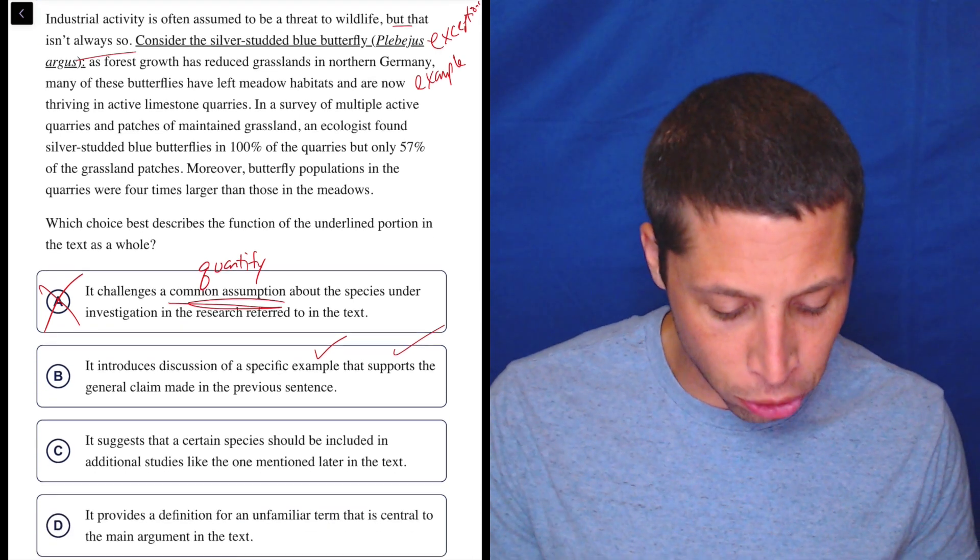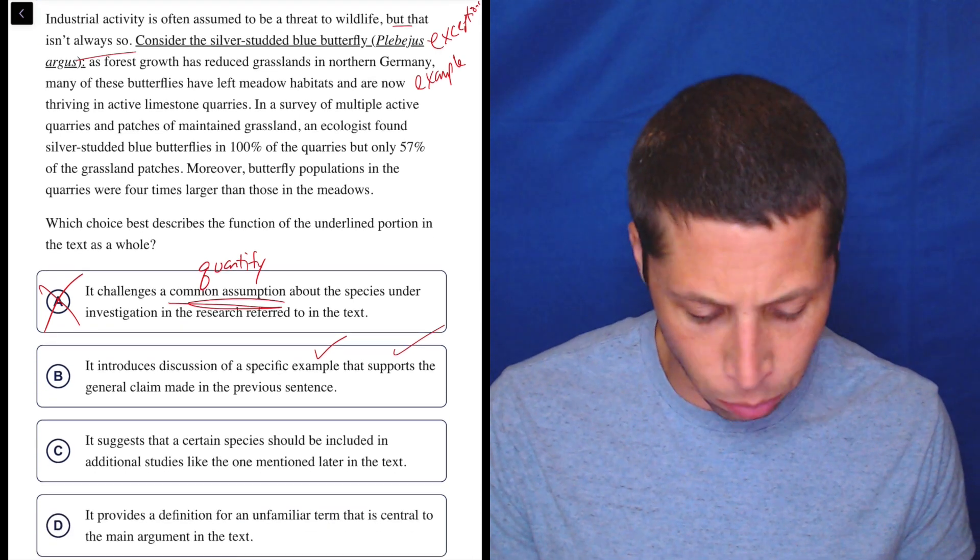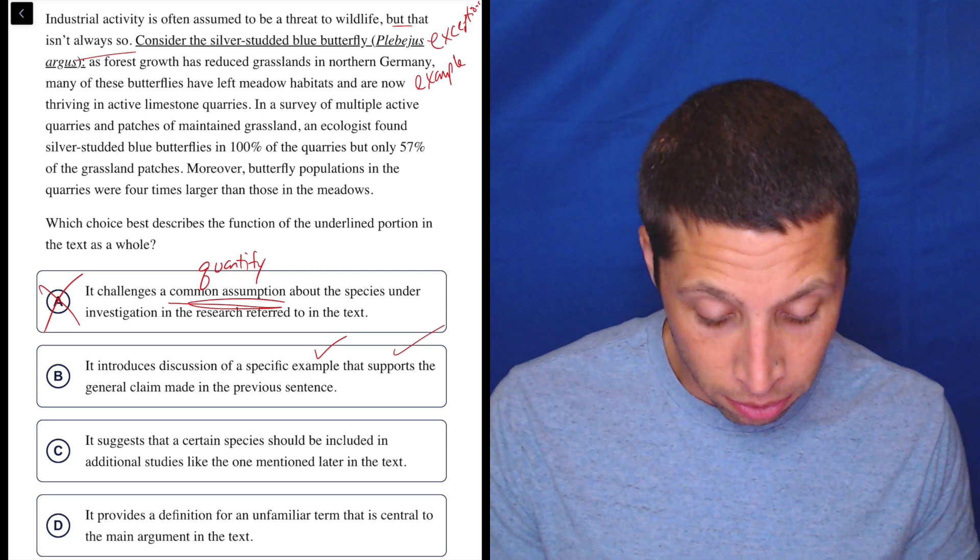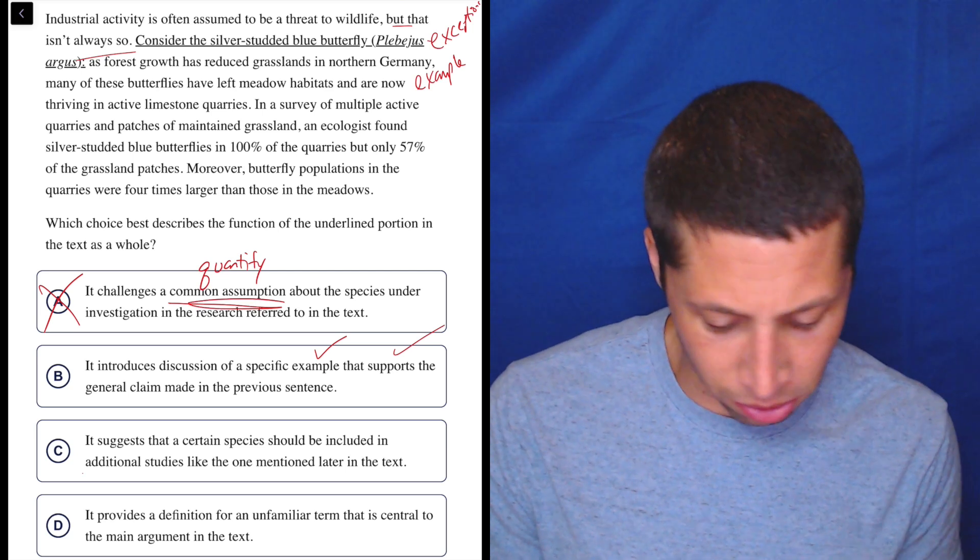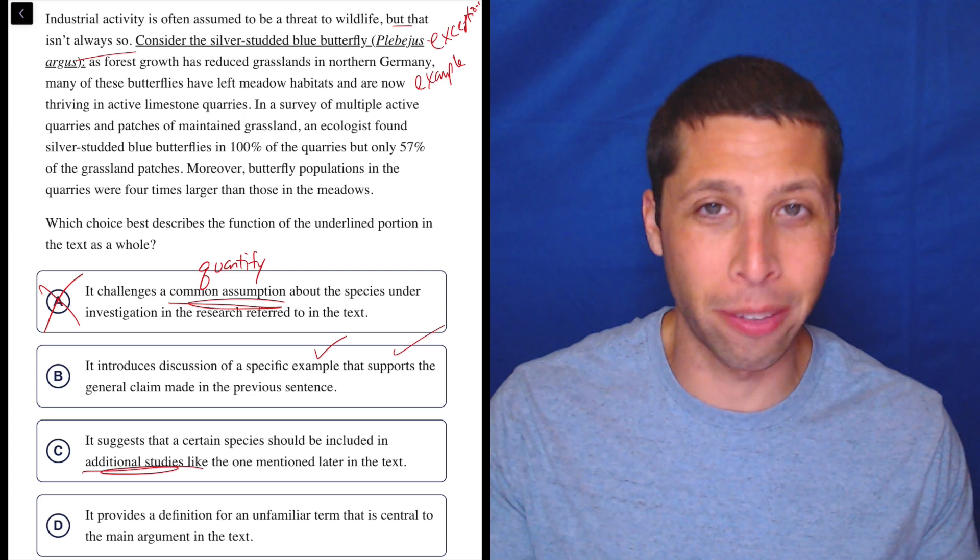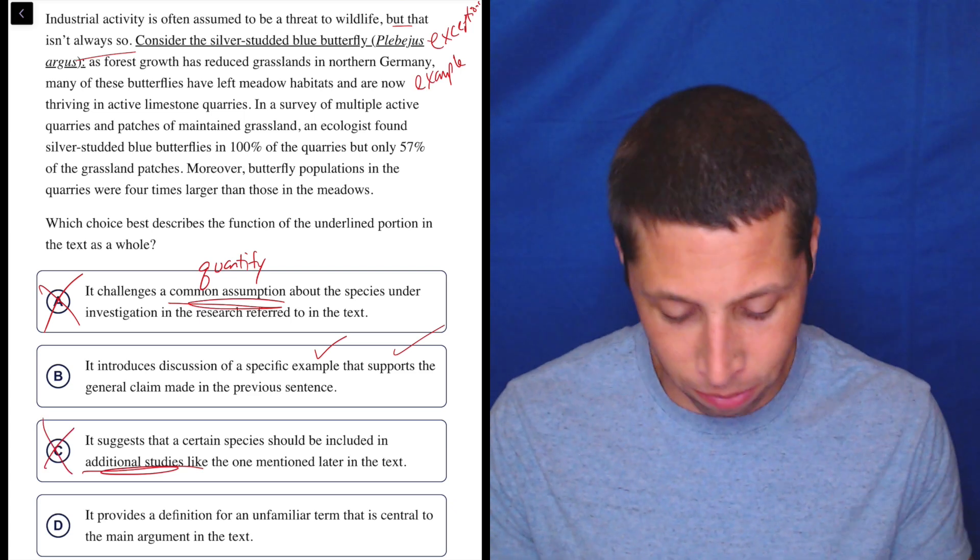C, it suggests that a certain species should be included in additional studies, like the one mentioned later in the text. Do they mention... Why do they say additional studies? It seems like we got enough studies. We get the butterfly. We understand it. So, no.